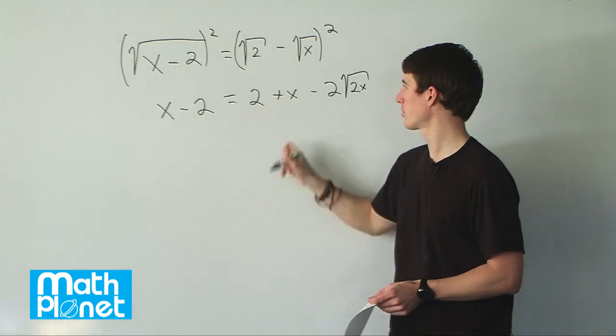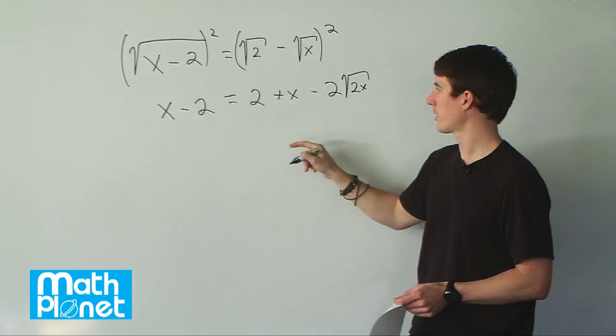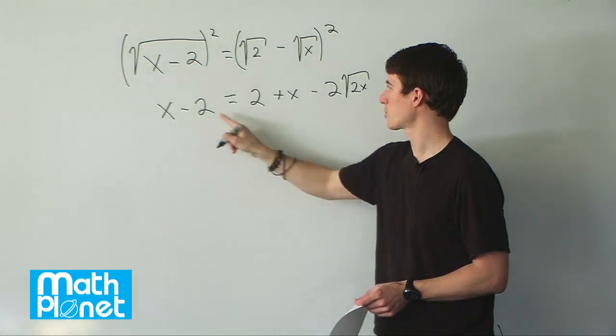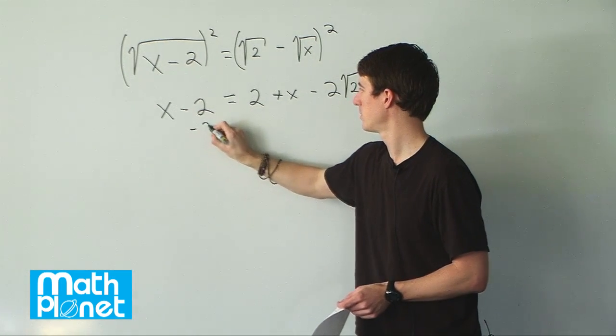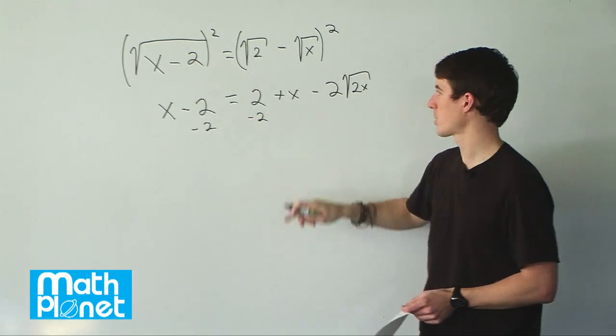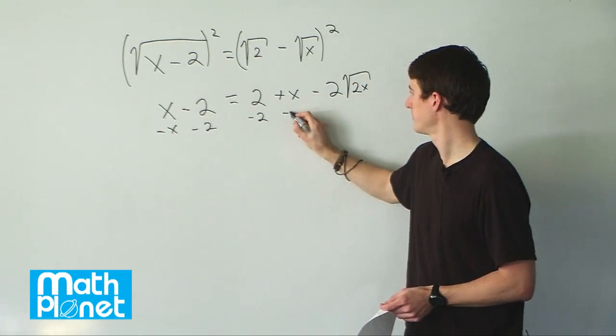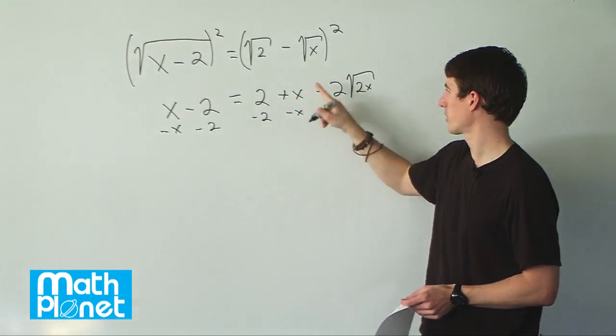We have two terms, we have x terms, and then we have this. Let's start by subtracting 2 from both sides, and we'll subtract x from both sides. So that gives us this cleared up.